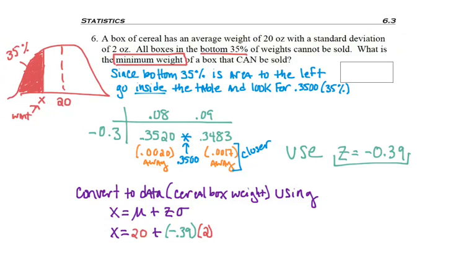So I've plugged in each value that I was given or I found, cleaned up the math and got 19.22. So I'm ready to come over here to my answer box and answer: what is the minimum weight of a box that can be sold? And the answer is 19.22 ounces. That gives me the cutoff from the bottom 35%, which cannot be sold.